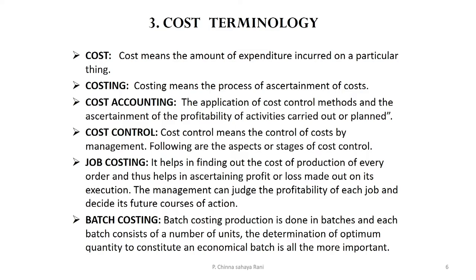Cost control is about evaluating whether you're achieving your objectives and taking corrective action. Job costing is whereby in a particular activity you need to find out whether you're making a profit or a loss, so you can judge the profitability of each job and decide whether to drop or take up a particular activity.